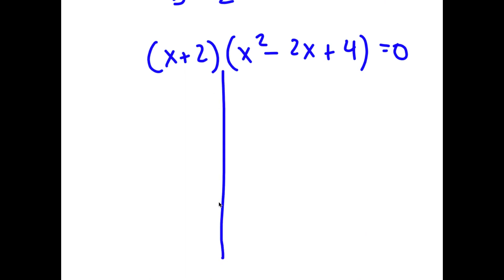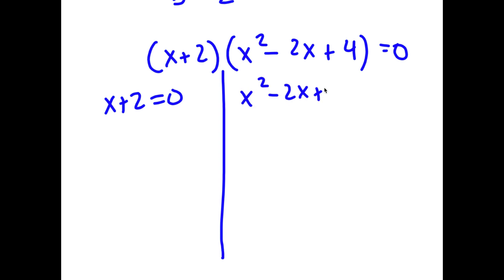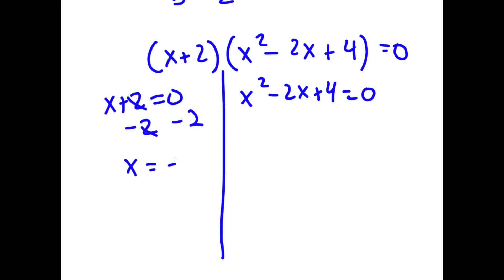So now this gives me two equations. I have x plus 2 is equal to 0, and I have x squared minus 2x plus 4 is equal to 0. To start, I'm going to first solve x plus 2 equals 0, which is a simple equation. All I have to do is subtract 2 on both sides, and I get x is equal to negative 2.